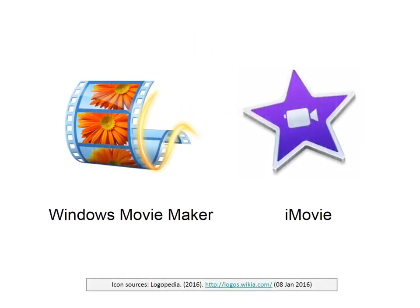Until quite recently, it was necessary to have fairly expensive video recording equipment in order to make a video. That's no longer the case — your average smartphone, tablet, or digital camera will shoot video for you. When it comes to video, you'll almost certainly want to do some editing: cutting the video, adding titles at the beginning and credits at the end, or adding subtitles. The best known software for doing this is Windows Movie Maker on a PC or iMovie on a Mac.